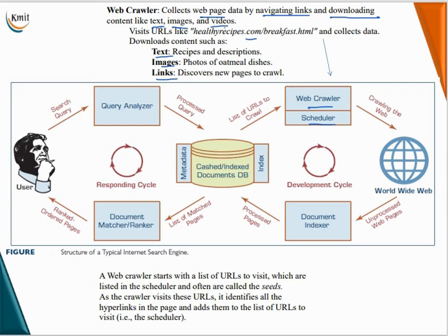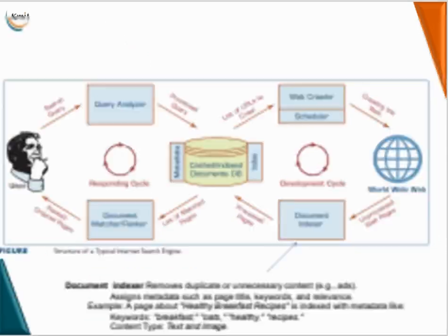The web crawler starts with a list of URLs to visit, which are listed in the scheduler and often called seeds. As the crawler visits these URLs, it identifies all the hyperlinks in the pages and adds them to the list of URLs to visit in the scheduler.